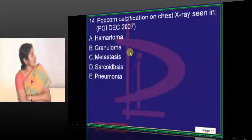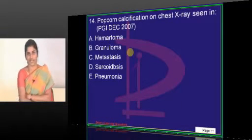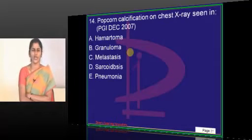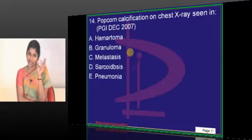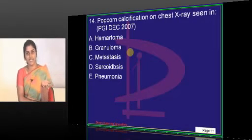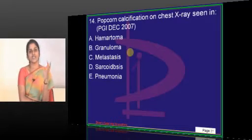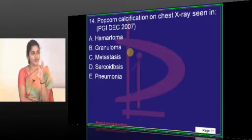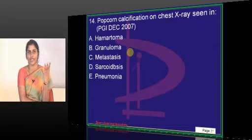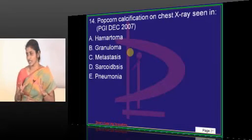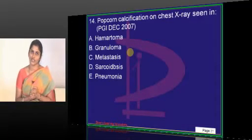Popcorn calcification on chest x-rays seen in—what do you mean by this popcorn calcification? We have quite a lot of conditions which have this fancy term popcorn. Popcorn cells are seen in Hodgkin lymphoma, lymphocytic variety. So this popcorn calcification, what do you mean by that? It's a radiological finding. It's amorphous calcification. Amorphous is no shape, no morphology. Amorphous calcification with rings and arcs. That's what radiologists will say with fancy terms popcorn calcification.